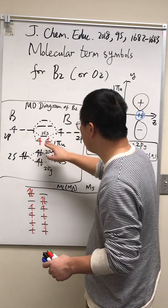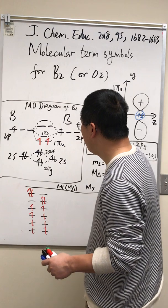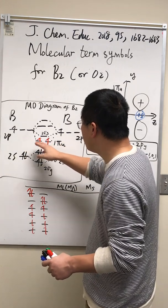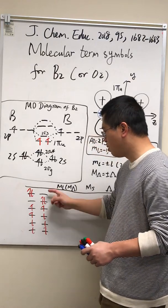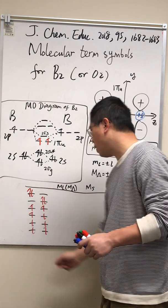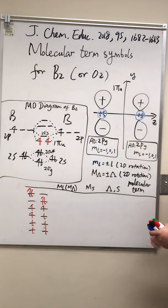We'll just look at those two degenerate orbitals. When you put two electrons in two degenerate orbitals, there are six microstates, and we will group these six microstates into molecular terms.